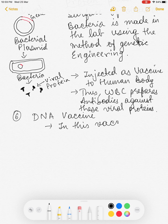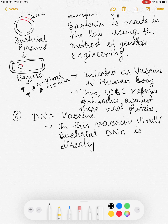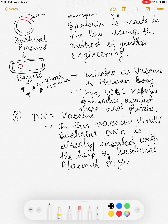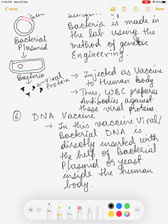In a DNA vaccine, viral or bacterial DNA is directly inserted with the help of a bacterial plasmid — the chromosome of the bacteria or yeast — inside the human body. So instead of taking the protein, we take the DNA or RNA of the virus or bacteria and insert it directly into the human body using a bacterial plasmid.